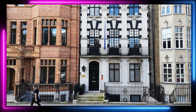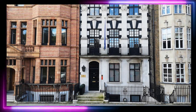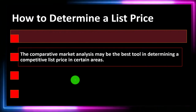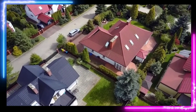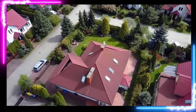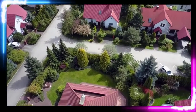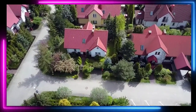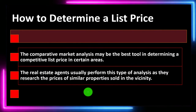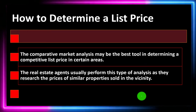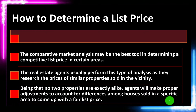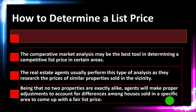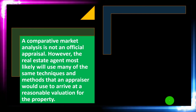You can get your best estimate by looking at other properties, but it's not going to be a perfect situation. If you're in a place where all the houses look and feel the same and there have been many recent sales, you'd get a pretty good feel for it. But if you've got a house that's quite unique or has no houses immediately around it, that can make it more difficult. Real estate agents usually perform this type of analysis, researching prices of similar properties sold in the vicinity and making proper adjustments to account for differences among houses to come up with a fair list price.